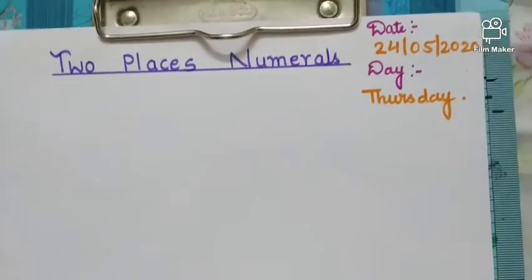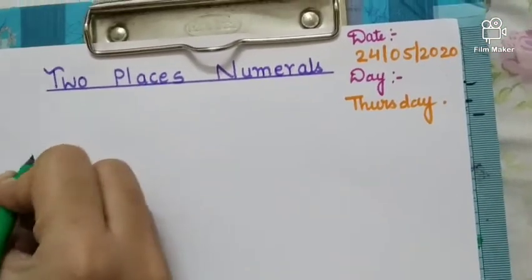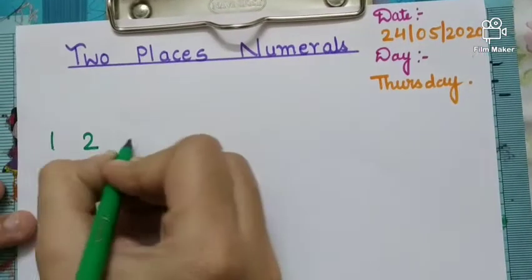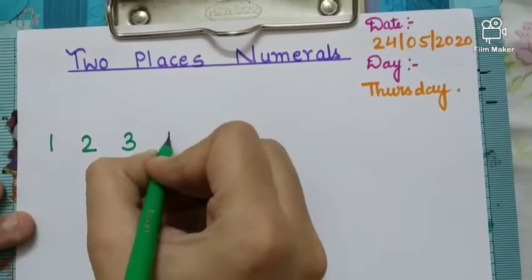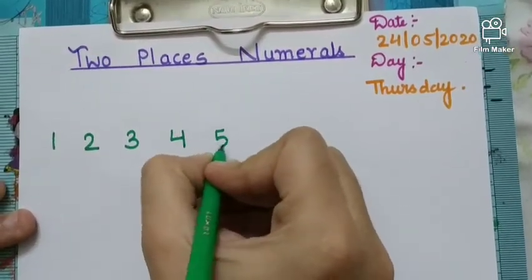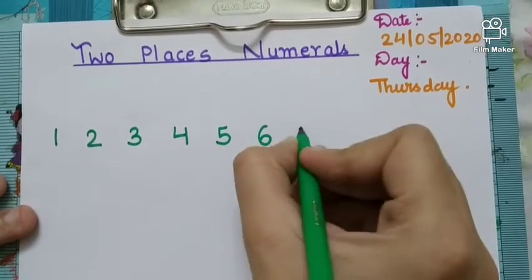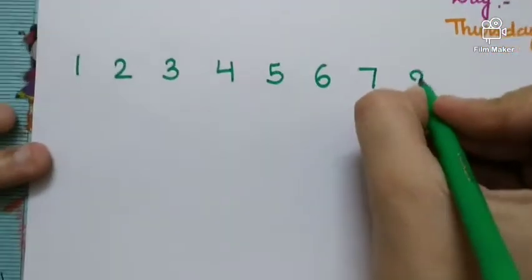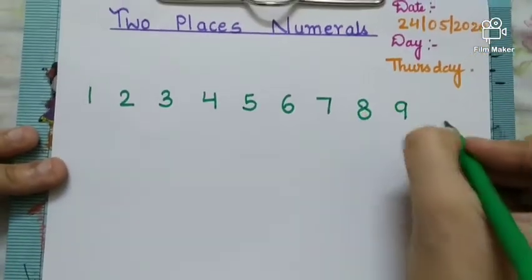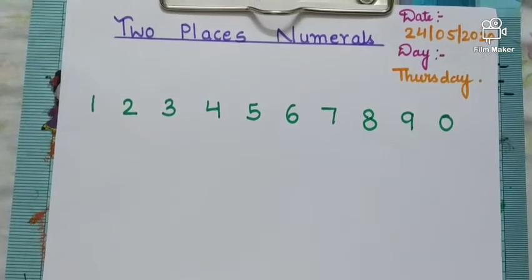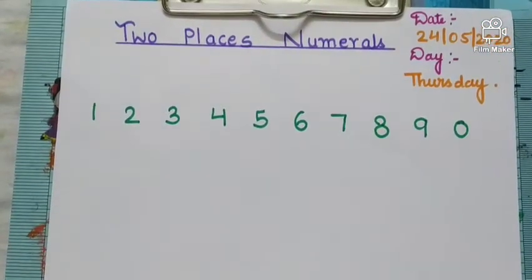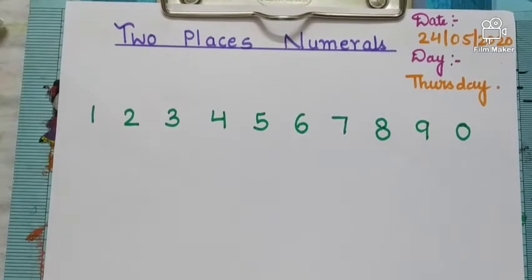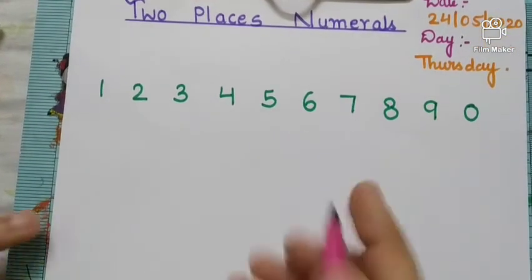Done? So today we will learn a new topic which is two-place numerals. See, the numbers 1, 2, 3, 4, 5, 6, 7, 8, 9 and 0. These numbers are in one's place. Single digit numbers kya hote hain? One's place mein aate hain.